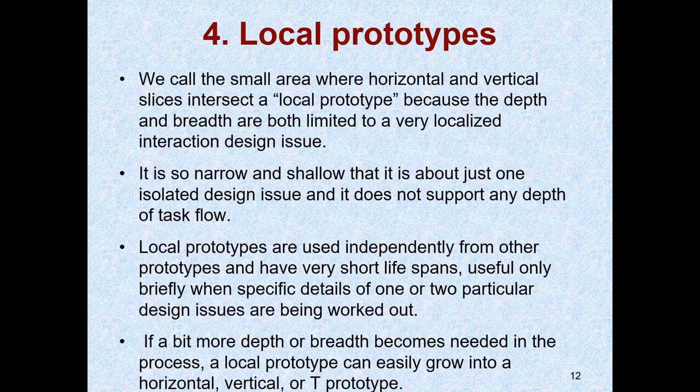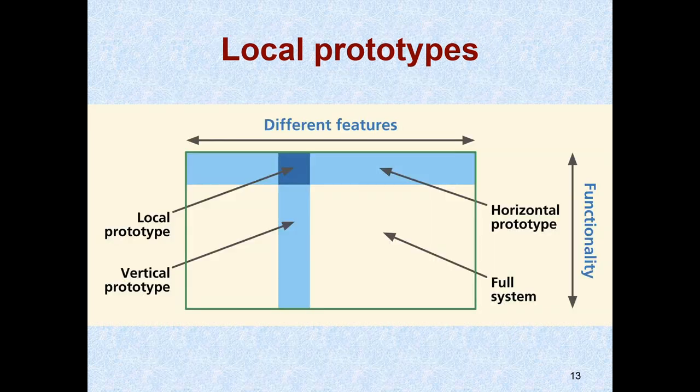Next is the local prototype. Local prototype is a small area which is the intersection of horizontal and vertical. It is independent from other prototypes and has a short lifespan. Local prototype is used when there are design issues that need to be resolved to complete the project. For example, if we are confused about which icon to select, we can make more than one local prototype to see which one suits best and then select one. Local prototype can further be grown into horizontal, vertical, or T prototype.